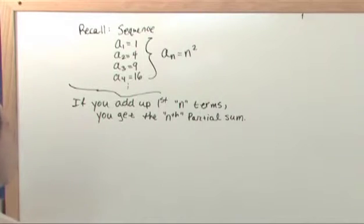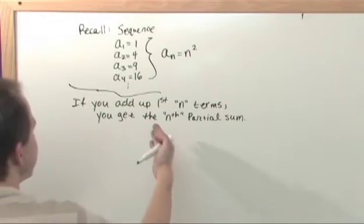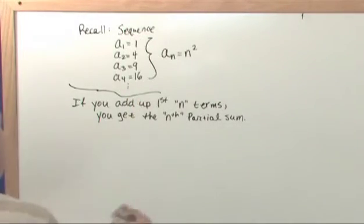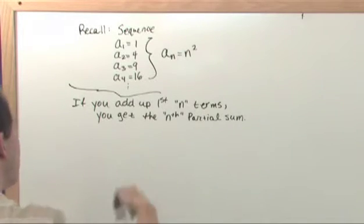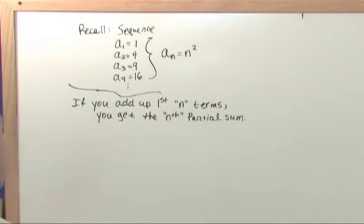All it means is that if I add up the first three numbers, then I get the third partial sum: 1 plus 4 plus 9. If I add up the first four of them, I get a different partial sum. If I add up the first 10 of them in the sequence, then I get the 10th partial sum, because I'm adding up the first 10 of them.